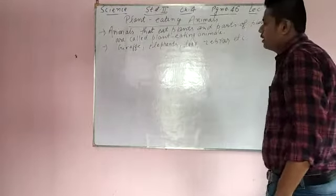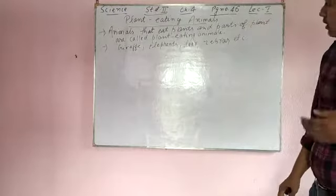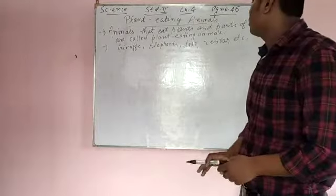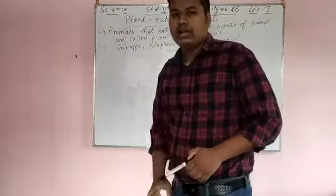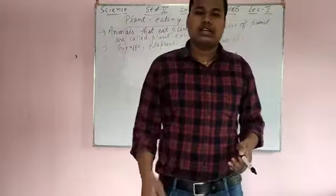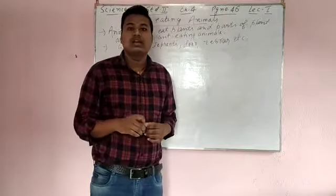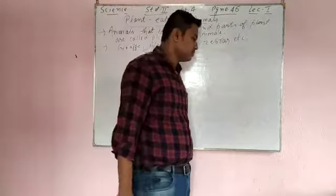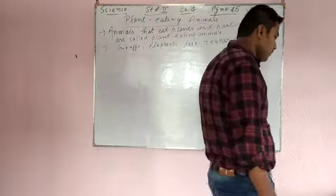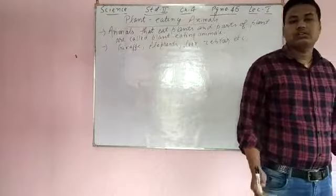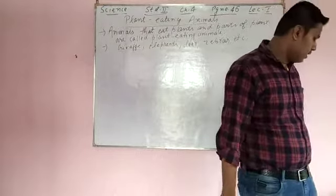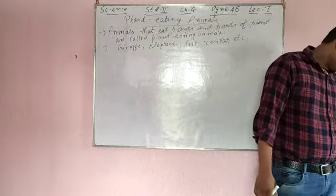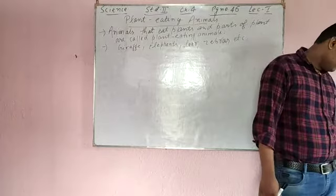So animals that feed on plants and parts of a plant are called plant-eating animals. Like an elephant eats sugarcane, cow eats grass, and deer eats some parts of a plant. Now we will go to flesh-eating animals.